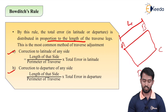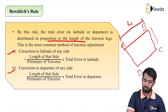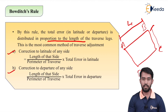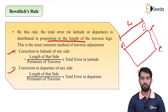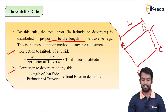After knowing the latitude correction, we also calculate the correction in departure. The correction of departure of any side — for example, side BC — is: length of that side (BC) divided by the perimeter of the traverse (summation of all sides), multiplied by the total error in departure. By finding out the errors in this way, we can correct them.